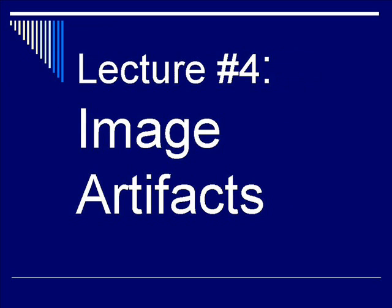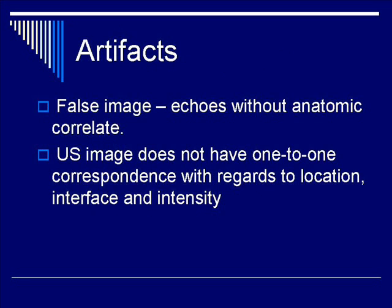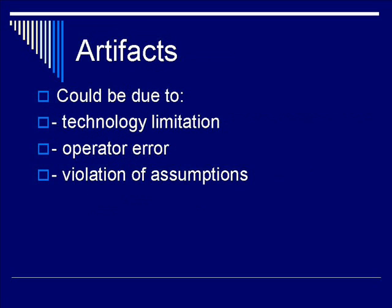What is an artifact? An artifact is a false image in which echoes without anatomic correlate are observed. They do not have one-to-one correspondence with regards to location, interface, and intensity. Artifacts could be due to many things: technological limitation of the system, operative error, or violation of assumptions.